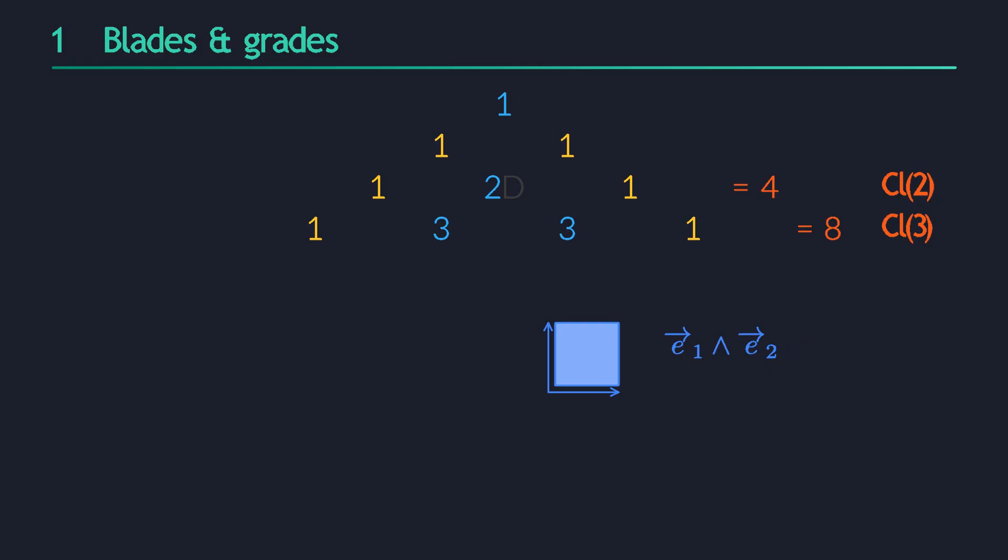So, in 2D, all bivectors are just scalar multiples of the single basis bivector E1 wedge E2. Another way to put this is that the space of bivectors is itself one-dimensional. That means that it's isomorphic to the scalars.